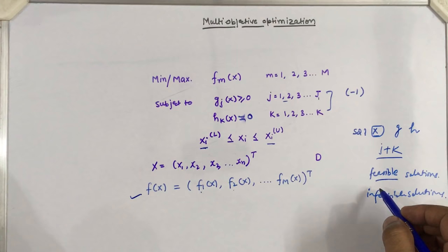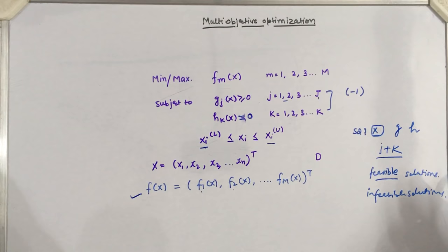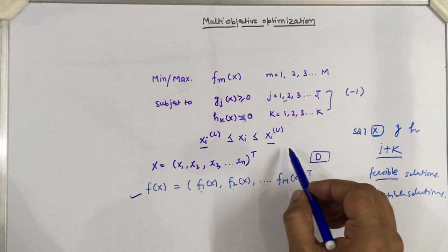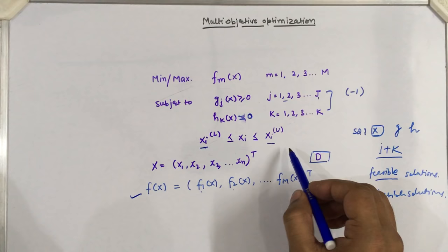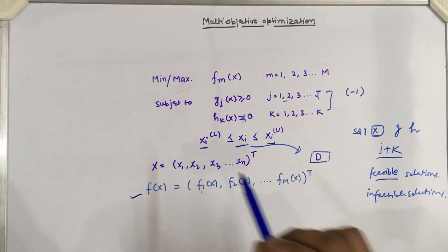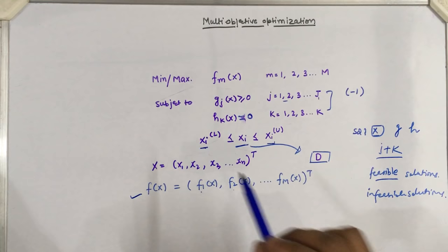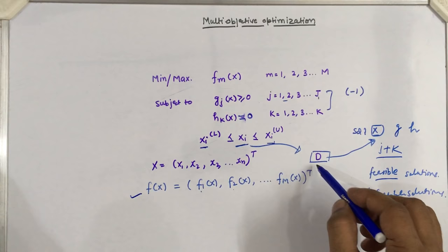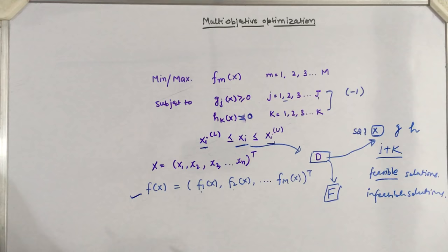Before solving a problem, we define the decision space D, which is the space containing all solutions x defined within the variable bounds. We then check feasibility by applying the constraint functions. The feasible space F contains only the feasible solutions that satisfy the constraints.